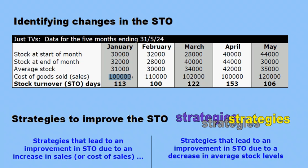Looking at sales or cost of sales — cost of sales increases or decreases due to sales. In this situation, sales has gone from $100,000 to $110,000, which is an increase in sales. But look at the average stock levels — they've actually declined. So there's been a decrease in average stock despite the fact that sales have increased, meaning the business must have managed its stock more efficiently during that period.